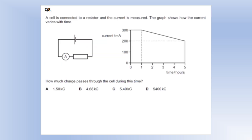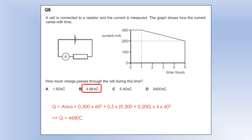A cell is connected to a resistor and the current is measured. The graph shows how the current varies with time. How much charge passes through the cell? This is where the integral becomes important because the current is not constant — integration means finding the area under the graph. Converting into amps and seconds: we have a rectangle for one hour, then a trapezium for the next four hours — average of the two sides times the base — giving a total charge of 4680, which is option B.